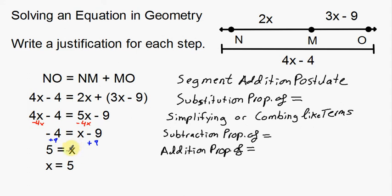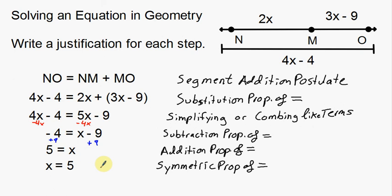Last but not least, this one looks like we just flipped things around — x went to the left side and 5 went to the right side. This is the symmetric property of equality, which says I can flip around the left and right side of my equation and everything stays the same. When I was in high school I always wanted to write the variable first, and the symmetric property of equality allows me to do that.